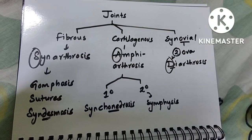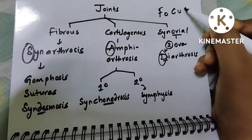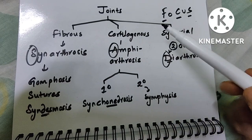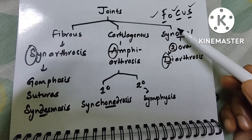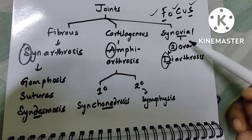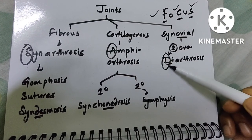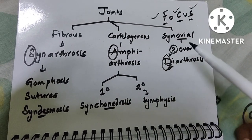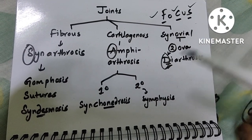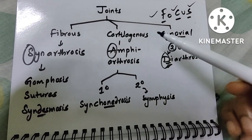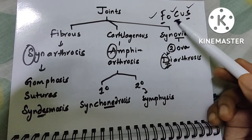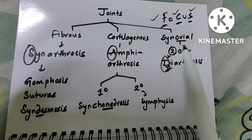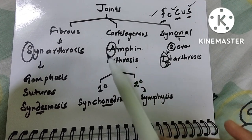Focus — FCS — stands for Fibrous, Cartilaginous, and Synovial, in that order. Synovial has 'ova' in it; there are 2 ova in a female body, so synovial equals diarthrosis. Cartilaginous is the middle one — amphi — like amphibians that live both on land and water — so amphiarthrosis is for cartilaginous. The first one, fibrous, is synarthrosis.